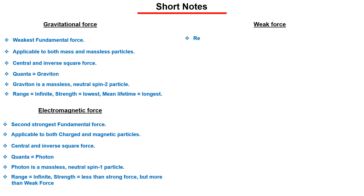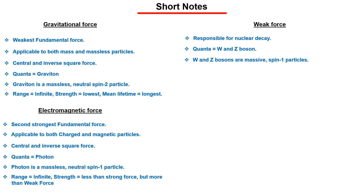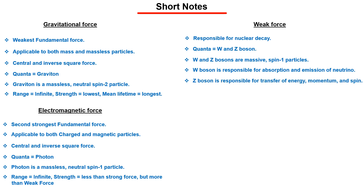Weak force is responsible for nuclear decay. The quanta of this force are W boson and Z boson. Both these particles are massive particles of spin 1. The W boson is charged while the Z boson is neutral. The W boson is responsible for the emission and absorption of neutrinos in weak interactions, while the Z boson is responsible for the transfer of energy, momentum, and spin. The strength of this force is greater than gravitational force, but due to the heavy mass of the exchange particle, its range is only 0.002 Fermi.